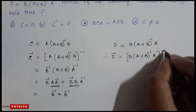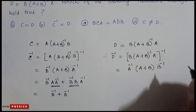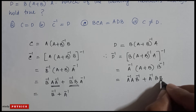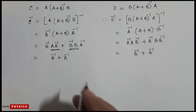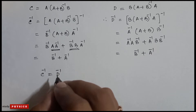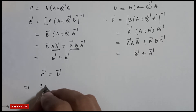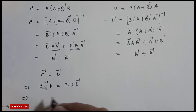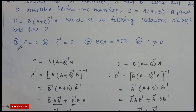Now D inverse is [B(A+B)⁻¹A] whole inverse, so we get A inverse (A plus B) B inverse. Multiplying out: A inverse A into B inverse plus A inverse B into B inverse, which gives B inverse plus A inverse. We can see that C inverse equals D inverse. Multiplying both sides by CD, we get D equal to C. So the correct option is A: C equals D.